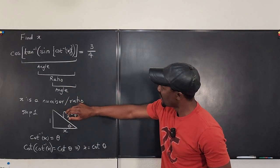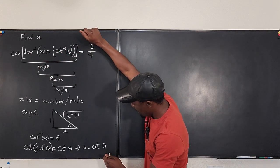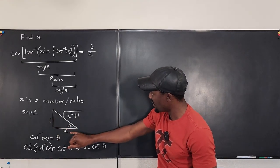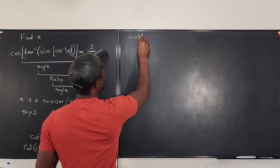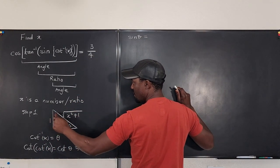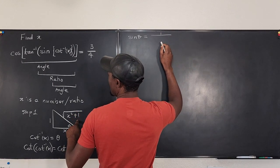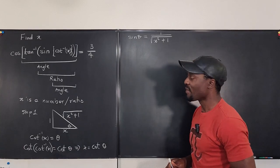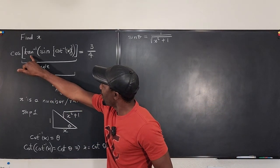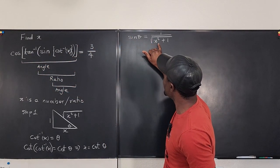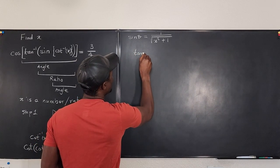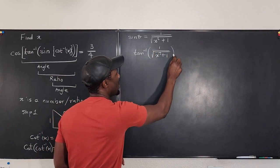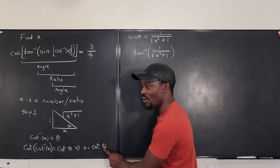The next step says the sine of this angle — and that angle is theta. So what would the sine of theta be? From this triangle, sine theta equals opposite over hypotenuse, which is going to be 1 over the square root of x squared plus 1. Now we need to find the arc tangent of sine theta, which is the arc tangent of 1 over the square root of x squared plus 1. Every time you take an arc tangent you get an angle, so we need another triangle.